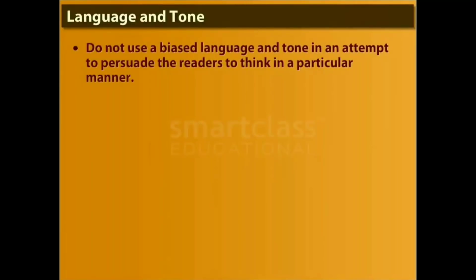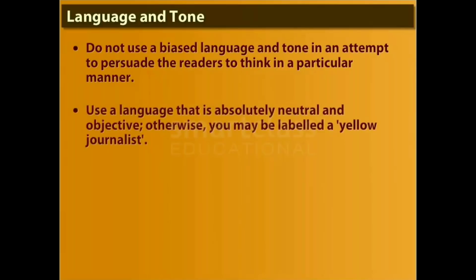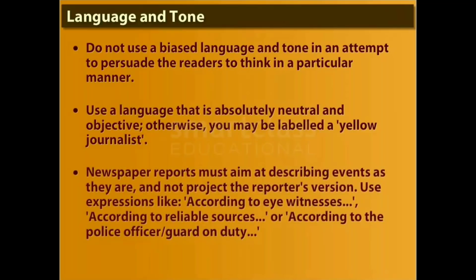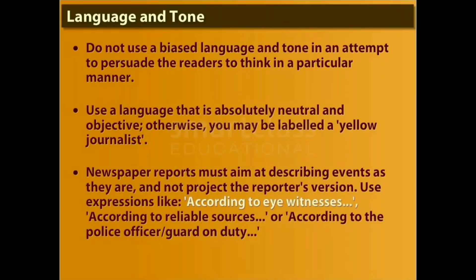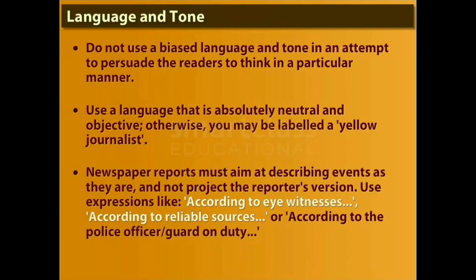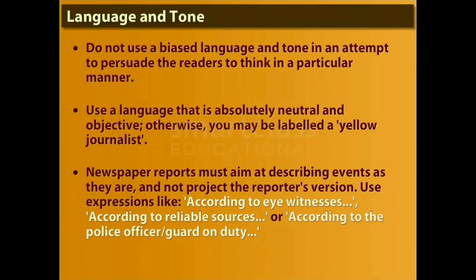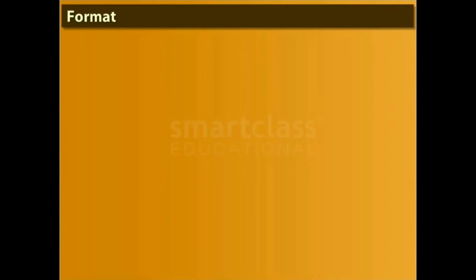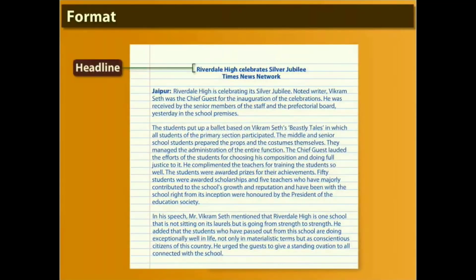Do not use a biased language and tone in an attempt to persuade the readers to think in a particular manner. Use a language that is absolutely neutral and objective; otherwise you may be labeled a yellow journalist. Newspaper reports must aim at describing events as they are and not project the reporter's version. Use expressions like 'according to eyewitnesses,' 'according to reliable sources,' or 'according to the police officer or guard on duty.'